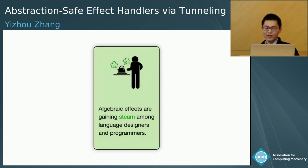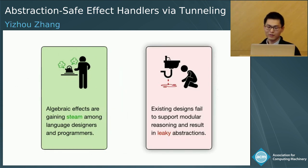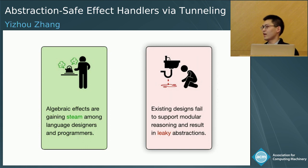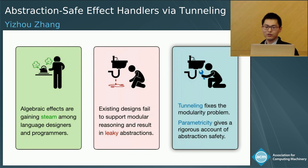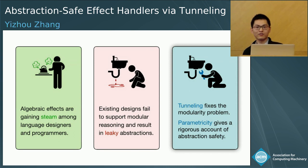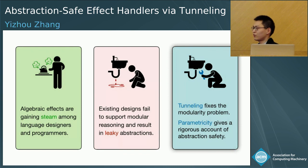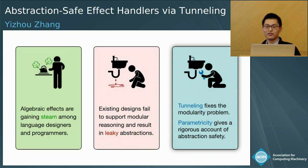To conclude: algebraic effects are a powerful unifying language feature, but existing designs have failed to support the fundamental principle of modular reasoning, with consequences of leaky abstractions and subtle program bugs. We introduce tunneled algebraic effects to address this serious modularity problem and give a rigorous account of abstraction safety by proving parametricity. We hope this work will offer guidance to future language designs that aim to support algebraic effects with strong abstraction guarantees.